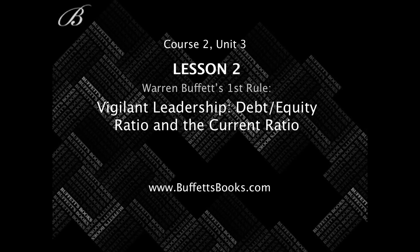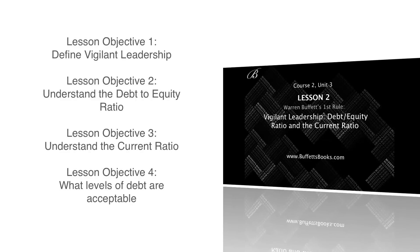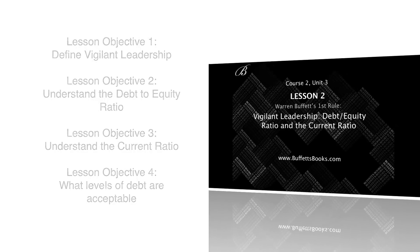Welcome to Course 2, Unit 3, Lesson 2 — Warren Buffett's first rule. In this lesson we have four objectives: to define vigilant leadership, to understand the debt to equity ratio, to understand the current ratio, and to understand what levels of debt are acceptable.